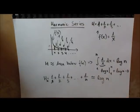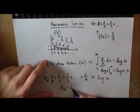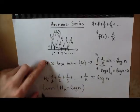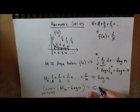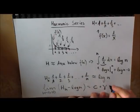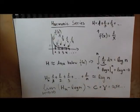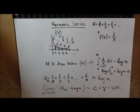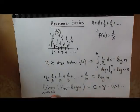What one can find out is that if you take the harmonic series, subtract the logarithm of n, and take the limit as n goes to infinity, you get a number called C or gamma. This number is approximately 0.5772 and is called the Euler-Mascheroni constant. It's related to Euler, who worked on this and also had the proof regarding prime numbers.